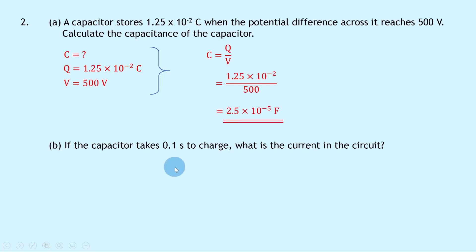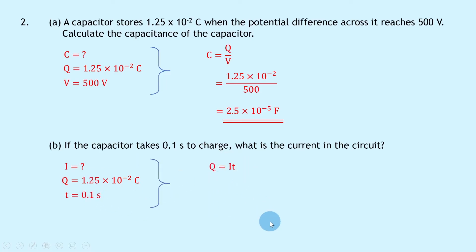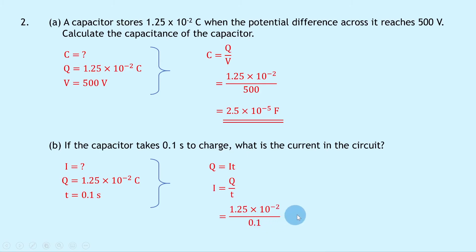Part B then says that if the capacitor takes 0.1 seconds to charge, what is the current in the circuit? Writing down what we know, we're trying to find the current I. We know the charge Q is 1.25 times 10 to the minus 2 coulombs and the time T is 0.1 seconds. Writing down our equation relating charge, current and time, we have Q equals IT. Rearranging for I by dividing both sides by T gives I equals Q over T. Substituting in the numbers gives 1.25 times 10 to the minus 2 divided by 0.1, giving an answer of 0.125 amps.